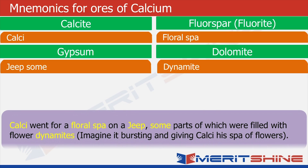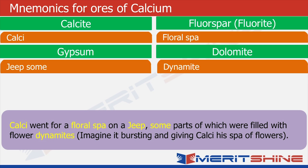The situation is: calcite, which is a calculator, wants to get a spa. Of course he cannot get a water spa, so he chooses to have a floral spa. This special spa is arranged on a jeep, and this jeep is also very special because some parts of it are filled with flower dynamites. That is how they give the floral spa — the dynamites burst and the subjects will have flowers pouring over them from all directions.